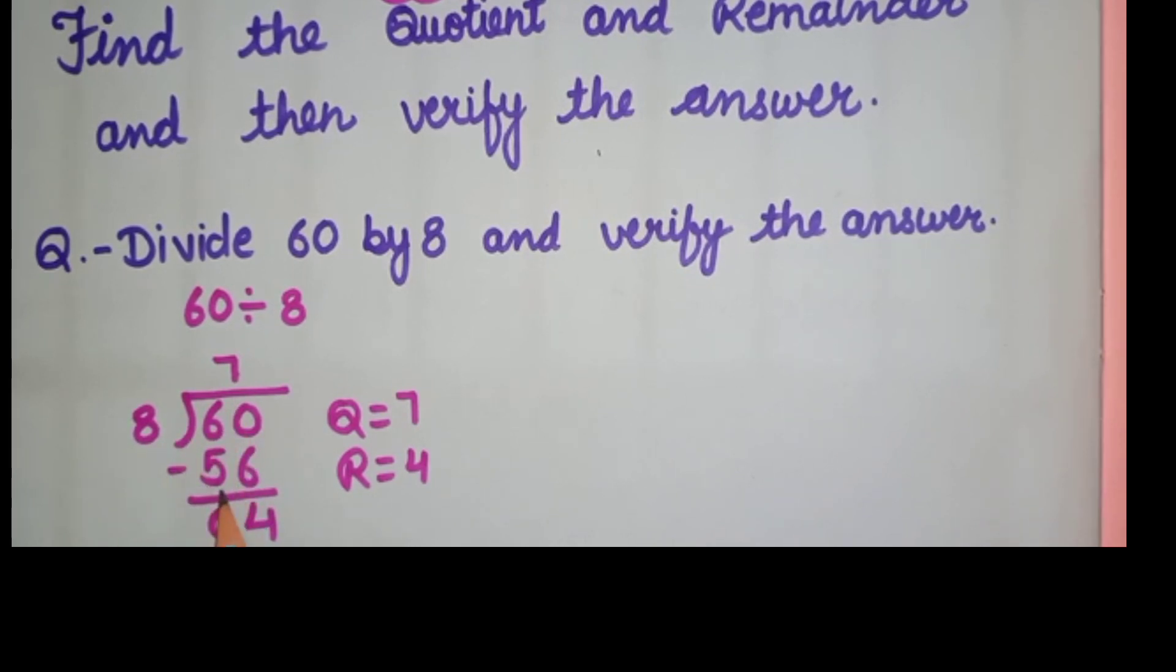8 times 7 is 56. If we multiply 8 by 8, 8 times 8 is 64. We cannot subtract 64 from 60. So we will multiply 8 by 7. 8 multiplied by 7 is equal to 56. 60 minus 56 is 4.